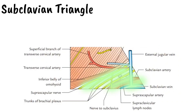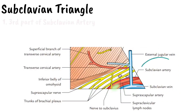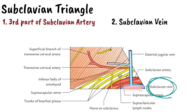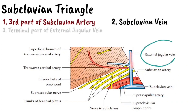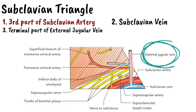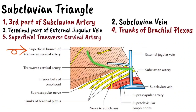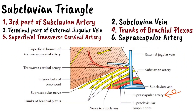The subclavian or supraclavicular triangle contains: 1. Third part of the subclavian artery. 2. Subclavian vein. 3. Terminal part of the external jugular vein draining into the subclavian vein. 4. Trunks of the brachial plexus. 5. Superficial transverse cervical artery. 6. Suprascapular artery. 7. Lymph nodes.